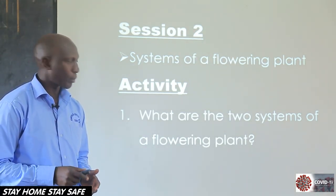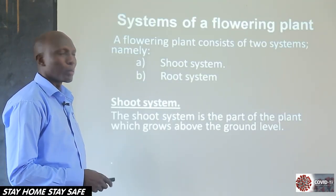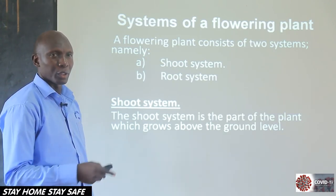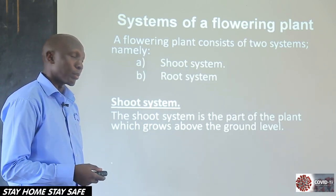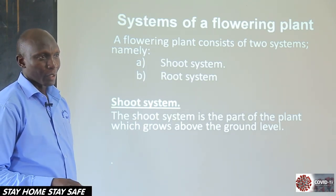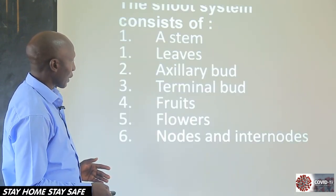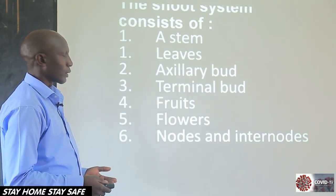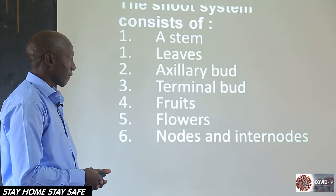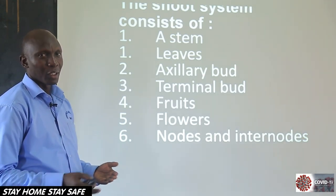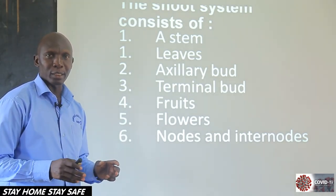We said the flowering plants are made up of two main systems: the shoot system and the root system. The shoot system is the part of the plant that is above the ground. Any part above the ground is taken to be in the shoot system, and it is made up of so many parts: the stems, the leaves, axillary buds, terminal buds, the fruits, the flowers, the nodes, and the internodes. All those parts above the ground constitute what we call the shoot system.